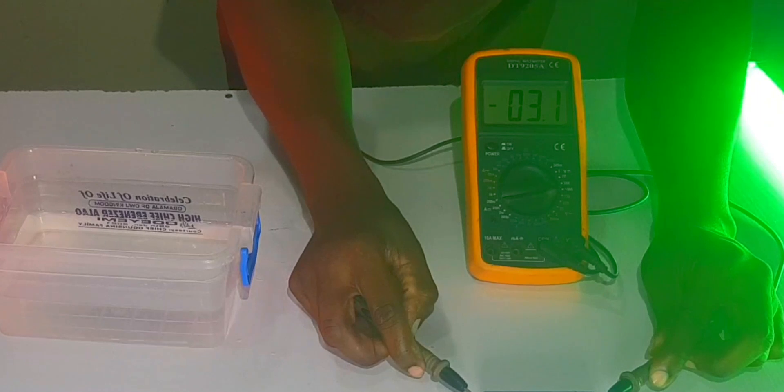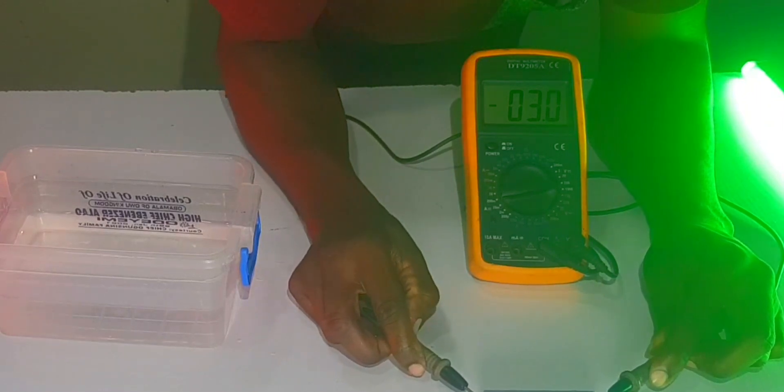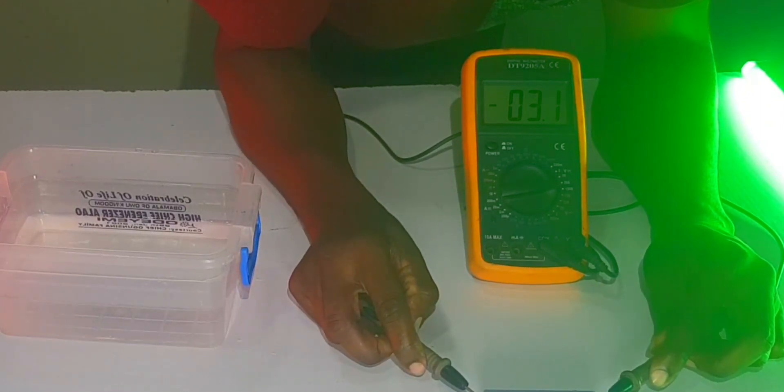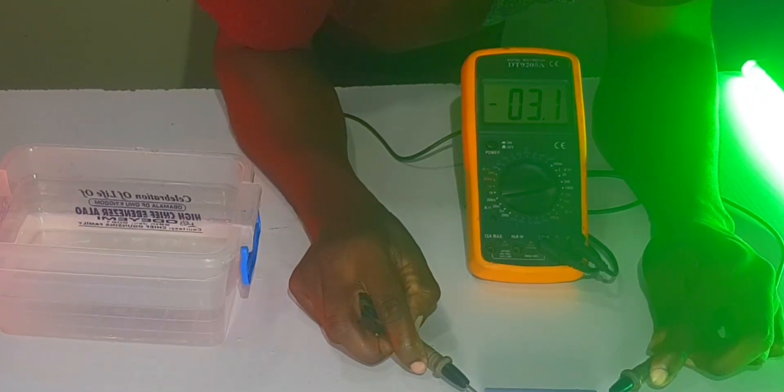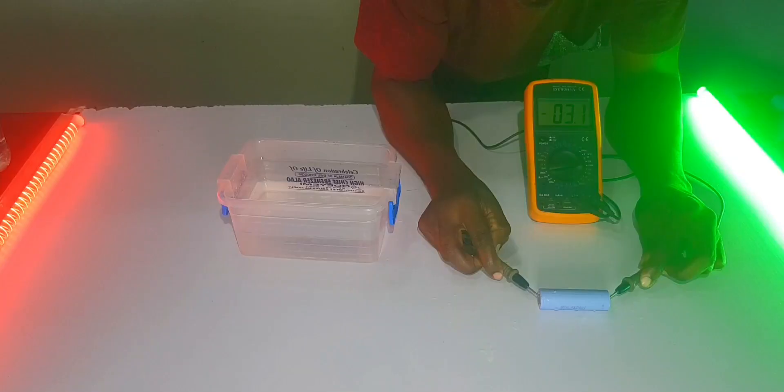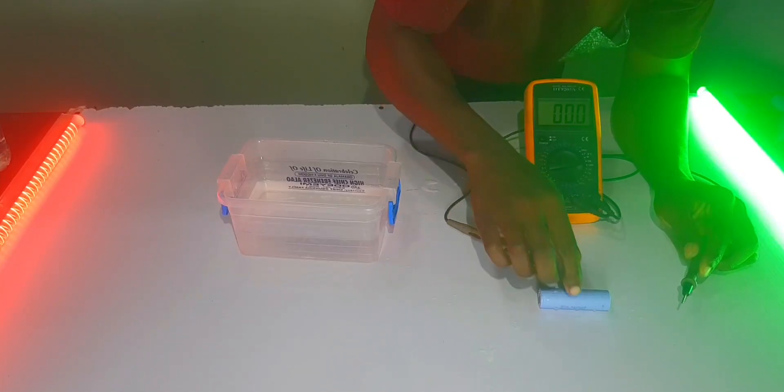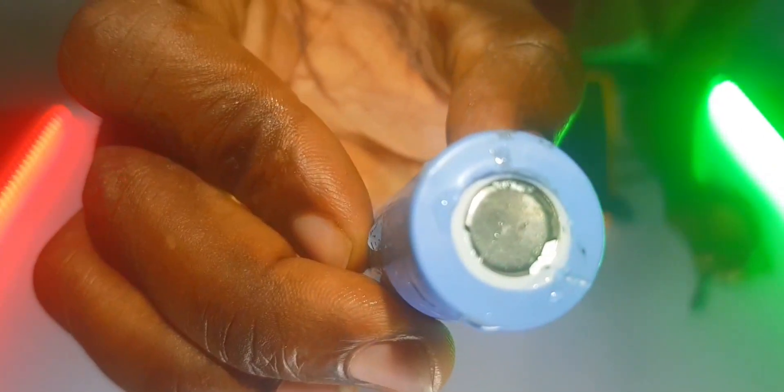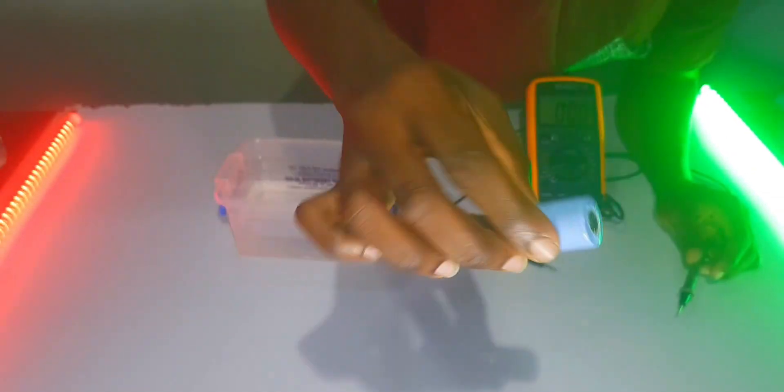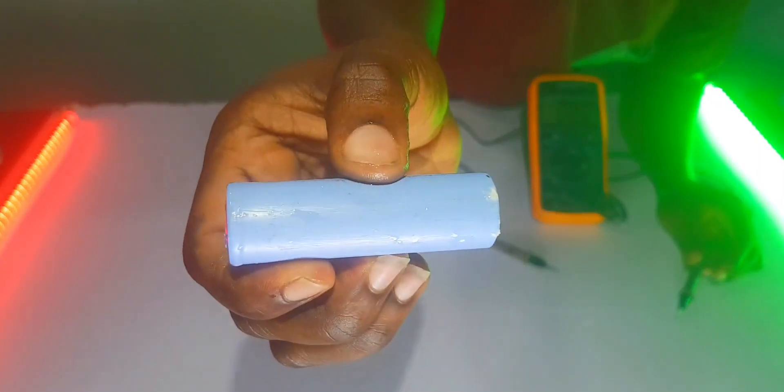Wow, it still shows 3.1 volts. When we tested the battery at first it was at 3.1 volts and currently still at 3.1 volts. This battery might actually be stronger than I thought. The water test didn't actually do so much to them.